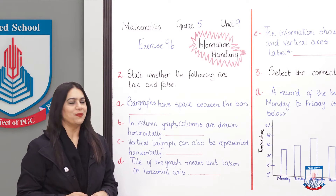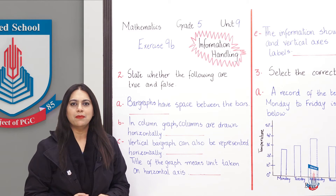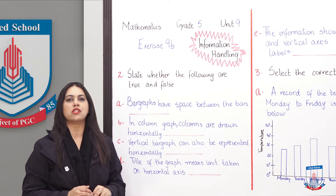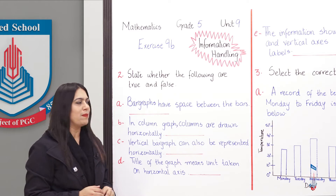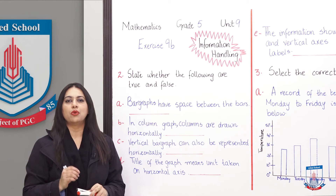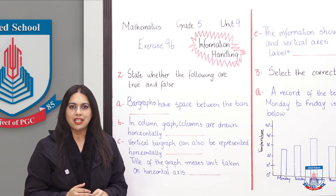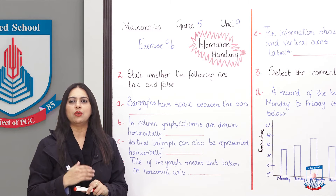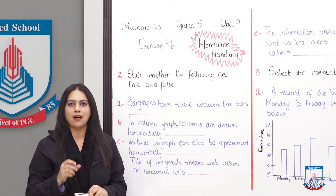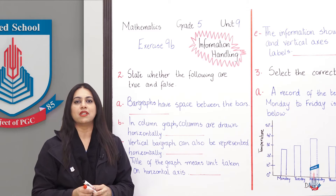Question number two: state whether the following are true or false. Students, we will read these statements and figure out which ones are true and which are false. Part A: 'Bar graphs have space between the bars.' Students, you can recall the previous lecture where we studied and drew bar graphs. We figured out that when we draw bar graphs, there is a small space between each bar — so this statement is TRUE.